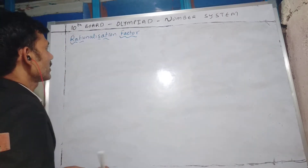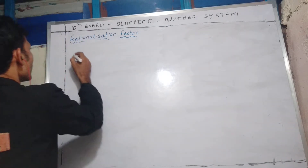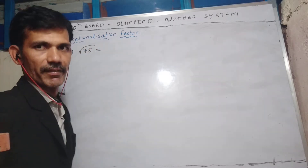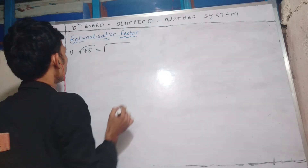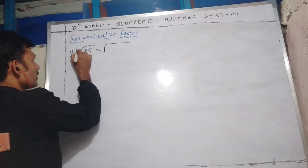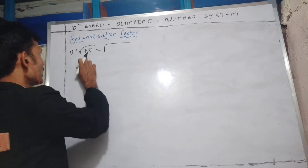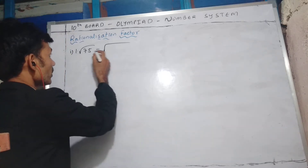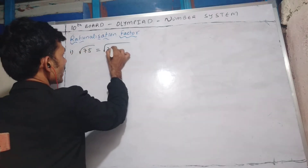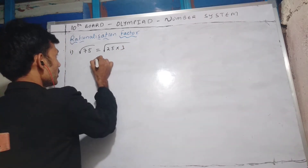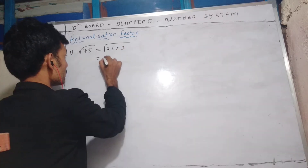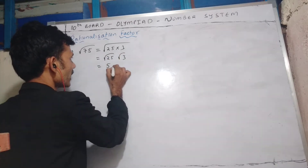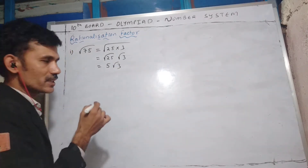First, we will start with monomials. Let us find the rationalizing factor of √75. 75 is a pure surd because the irrational factor is there and the other factor is a rational number. We have to express it in simple surd form. So, I can write 75 as 25 times 3, and using laws of radicals, that is √25 times √3. Since 25 is a perfect square, that gives us 5√3. Now it is in simple surd form.